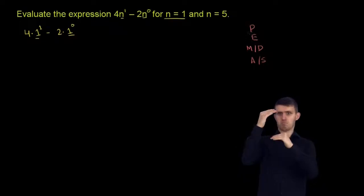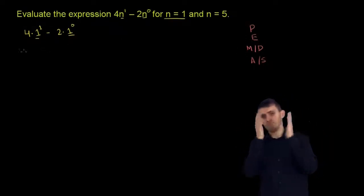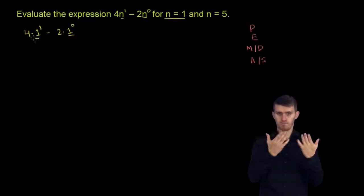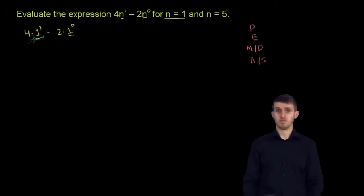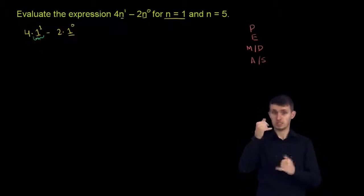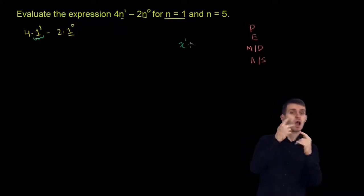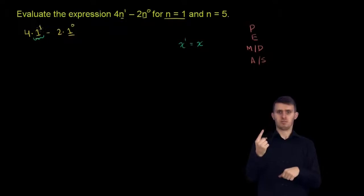So we want to do our exponents before we do anything else. There are no parentheses here. So we first want to evaluate 1 to the first power. Anything to the first power is just that anything. If I just have any number to the first power, that is just going to be equal to that number. So 1 to the first power is just equal to 1.